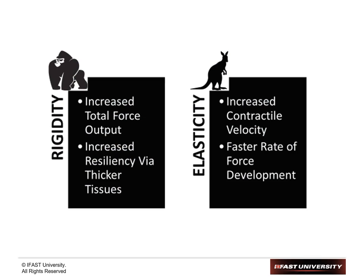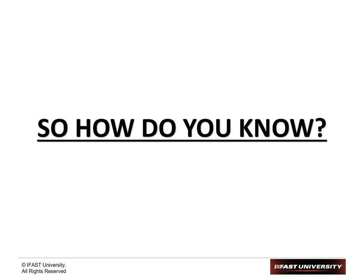A lot of research shows that if you remove the limiting factor for these athletes, they will improve in testables like vertical jump and 40-yard dash. If I have a gorilla who's already proficient in strength training, I might need to impose a time constraint or make them demonstrate force output quicker — that gives a greater return on investment. For a kangaroo, if I can increase the total force they can produce quickly, their performance should improve.